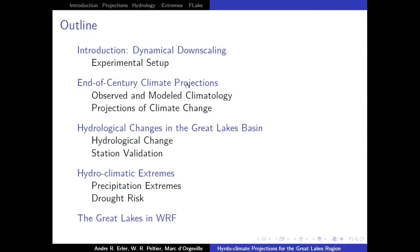Here's a brief overview of my talk. First, I'll introduce dynamical downscaling, regional climate modeling, and the experimental setup. Then I'll show projections based on dynamically downscaled simulations for the Great Lakes region for temperature and precipitation. In the main part, I'll talk about implications for the hydrological cycle, how runoff might change, changes to precipitation extremes, possibility for drought, and how climate change might affect the lakes.